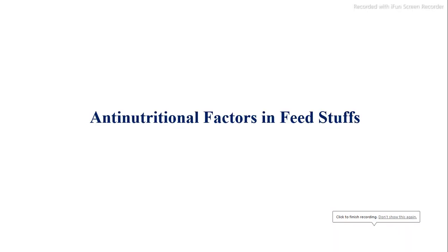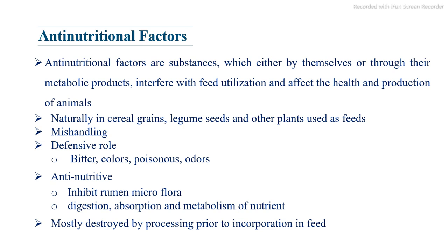Antinutritional factors are substances which, either by themselves or through their metabolic products, interfere with feed utilization and affect the health and production of animals. They are naturally present in cereal grains, legumes, seeds, and other plants used as feeds. They play a defensive role, producing bitter colors, poisonous compounds, and odors.